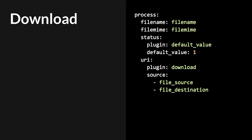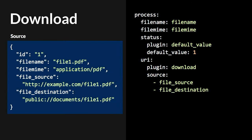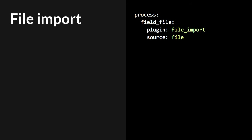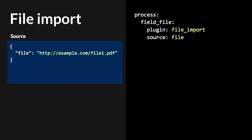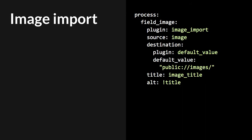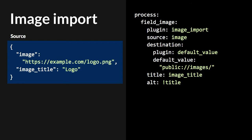For files, the download plugin allows you to grab a file from a remote source and save it to a destination, and then we can use migration lookup to populate the file ID into a file field. But I recommend using the file_import plugin, which is a very handy tool — it basically combines the download, the creation of the file entity, and the migration lookup in one go. The same thing for images: you can use the image_import plugin to do the magic.